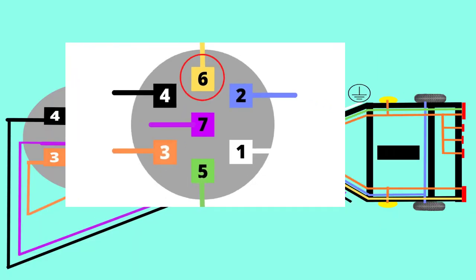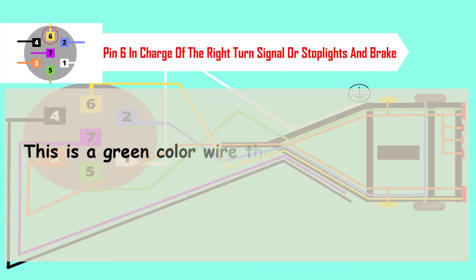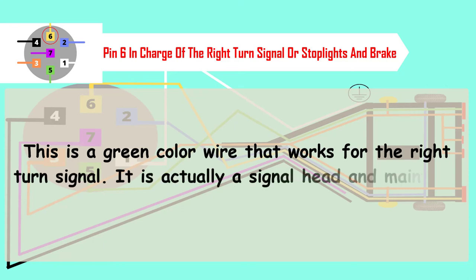Pin 6 is in charge of the right turn signal or stop lights and brake. This is a green color wire that works for the right turn signal. It is actually a signal head and maintains a position for the right turning users' clear viewing.